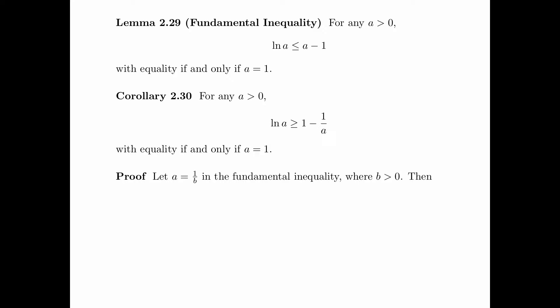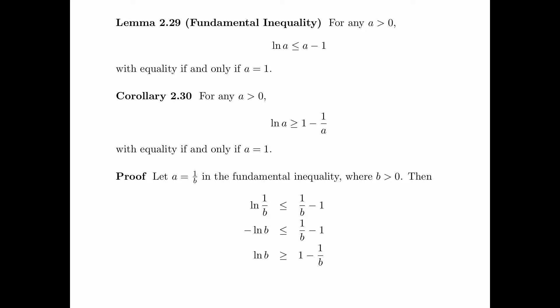Here is the proof of the corollary. Let a = 1/b in the fundamental inequality log a ≤ a − 1, where b > 0, so that a = 1/b is also greater than 0. By the fundamental inequality, log(1/b) ≤ 1/b − 1, or equivalently −log b ≤ 1/b − 1. Therefore log b ≥ 1 − 1/b, which is the inequality we need to prove. Equality holds if and only if 1/b = a = 1, that is, b = 1.